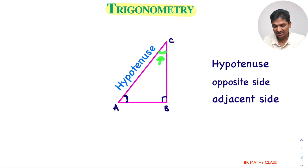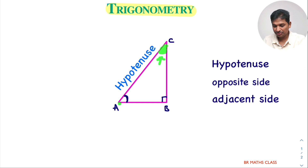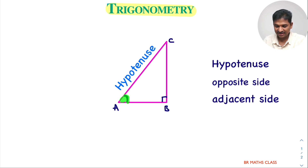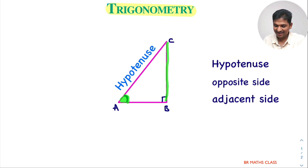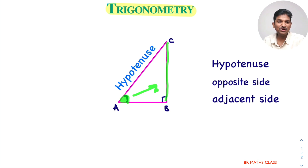If I consider angle C, what is the opposite side of angle C? The opposite side of angle C is AB. Here, I am considering angle A — the side exactly opposite to angle A is called the opposite side. So what is BC? BC is the opposite side to angle A.